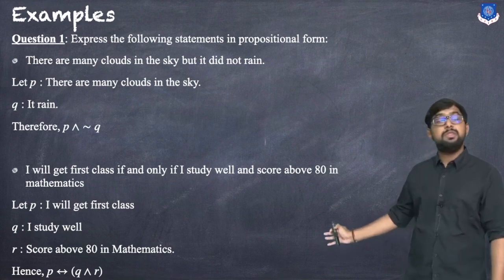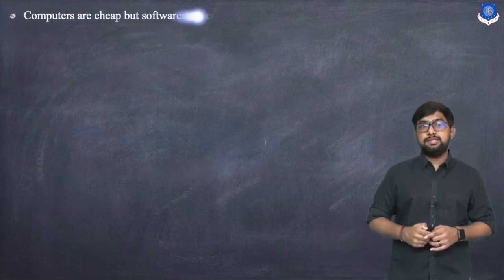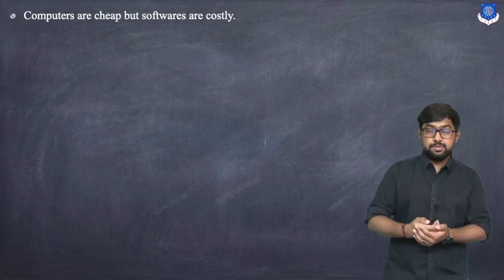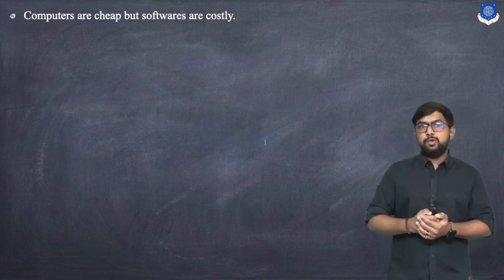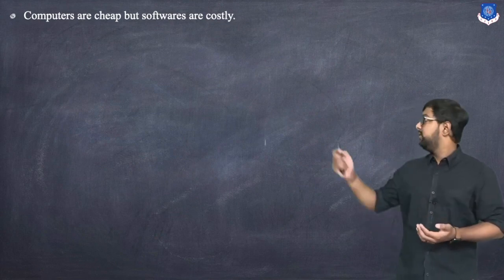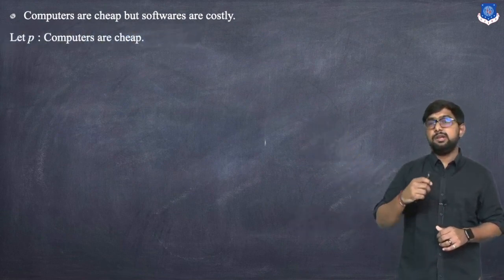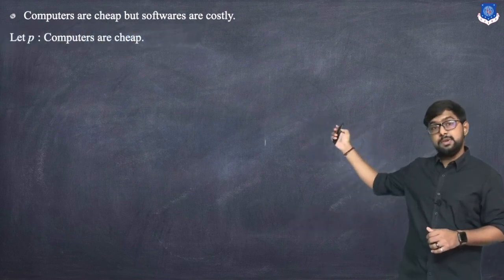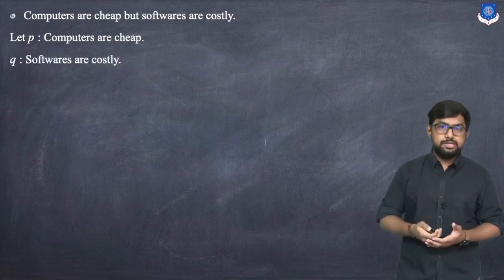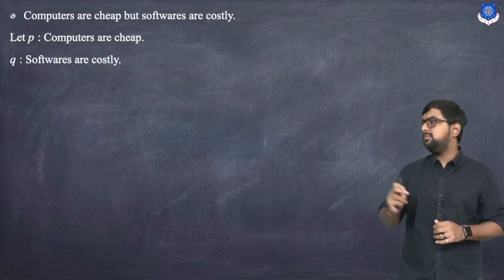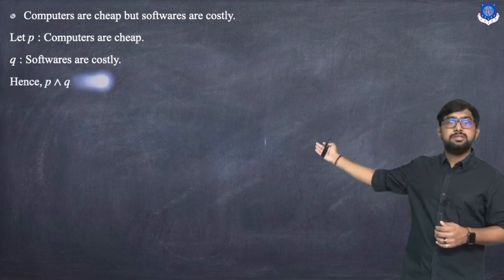Next example: 'Computers are cheap but software is costly.' We divide into two parts: P = 'computers are cheap,' Q = 'software is costly.' Since 'but' stands for AND, the propositional form is simply P ∧ Q.